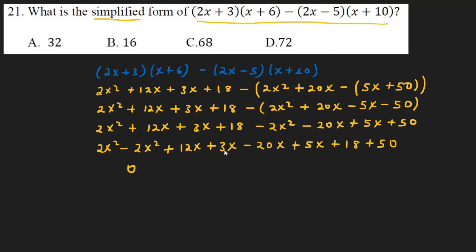12x plus 3x, minus 20x plus 5x. So, 2x squared minus 2x squared equals 0. And so, the algebraic expression simplified result gives 0 plus the remaining x terms plus 18 plus 15, simplified to the final answer.